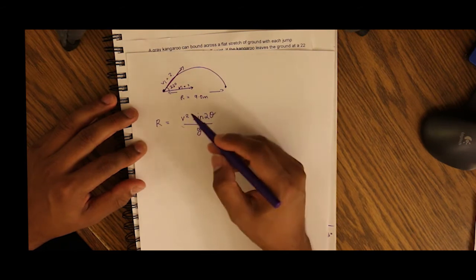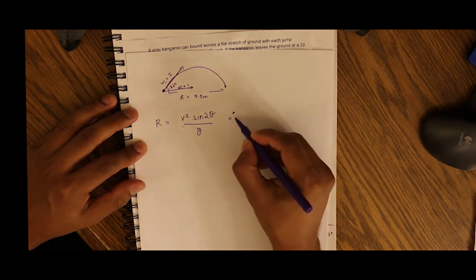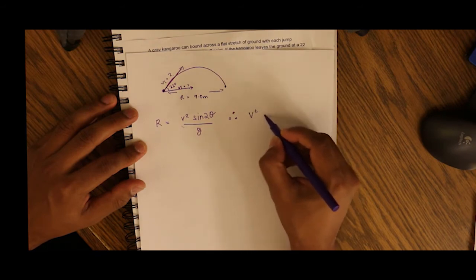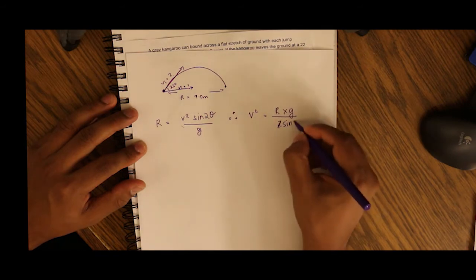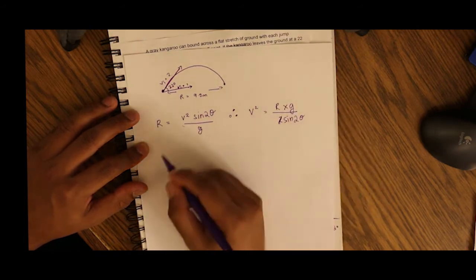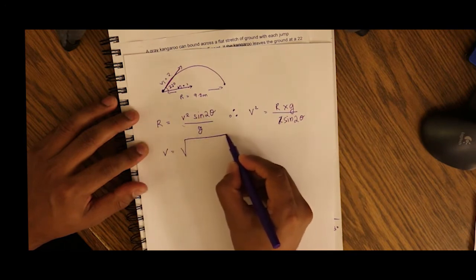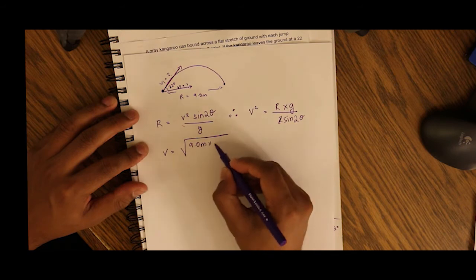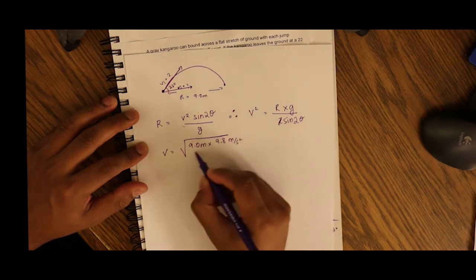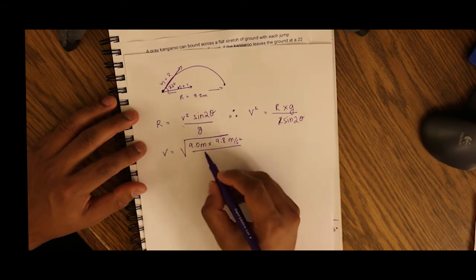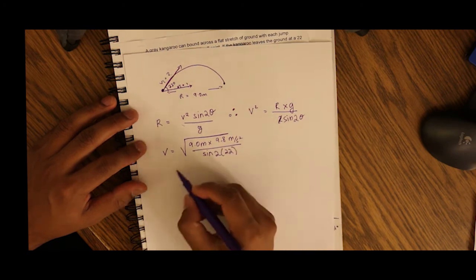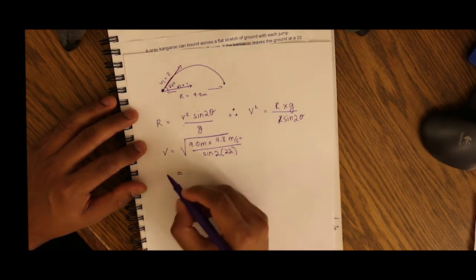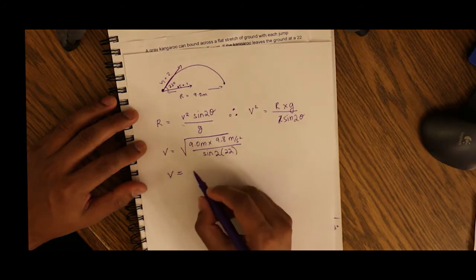Now if we want to find out v we just rearrange these terms as v squared would be equal to r times g over sine 2 theta. And therefore our v would be the square root of our r which is 9 meters, our g is 9.8 meters per second squared, and our sine 2 theta is sine of 2 times 22. So once we do this calculation we end up with a velocity of approximately 11 meters per second.